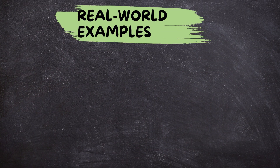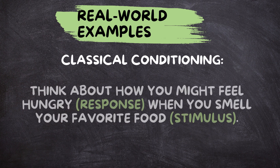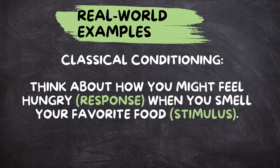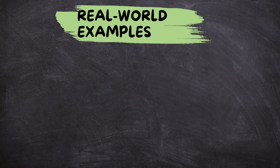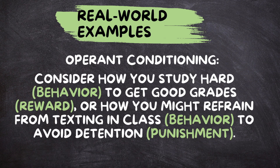Real-world examples. Let's look at real-life examples to better understand these concepts. Classical conditioning: think about how you might feel hungry — the response — when you smell your favorite food — the stimulus. Operant conditioning: consider how you study hard — the behavior — to get good grades — the reward. Or how you might refrain from texting in class — the behavior — to avoid detention — the punishment.